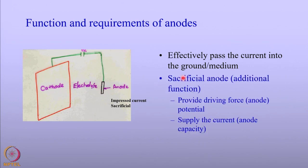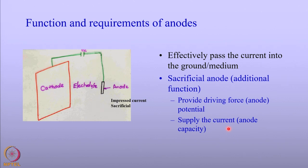When talking about the sacrificial anode, it must perform additional functions. It has to provide a driving force to pass current between the anode and cathode, given by the potential of the sacrificial anode. It also has to deliver the current, given in terms of the anode capacity. In contrast, for an impressed current cathodic protection system, the rectifier provides both the driving force and the current.